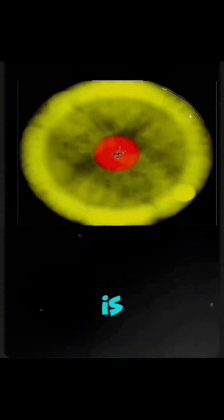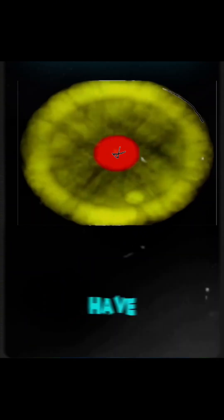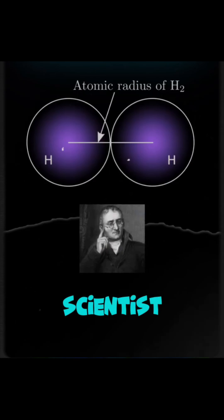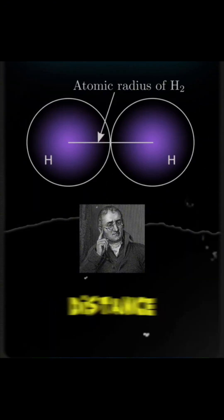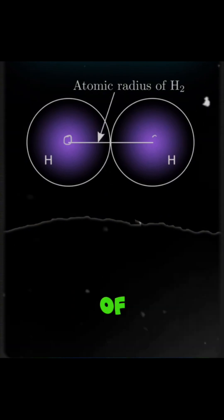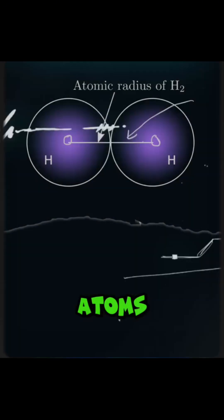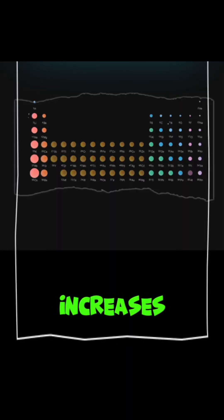However, this distance is not clear because the electron cloud doesn't have a clear outline. Scientists did manage to measure the atomic radius by measuring the distance between the nuclei of two adjacent atoms. The atomic radius increases as you move down the group and decreases when you move across a period.